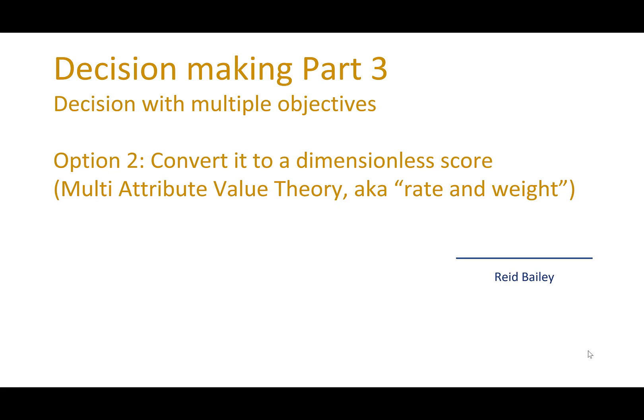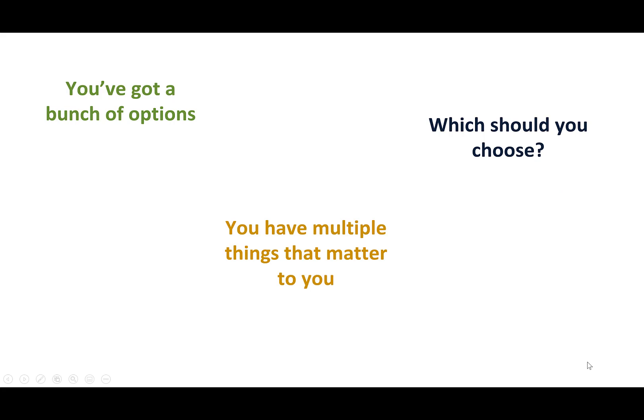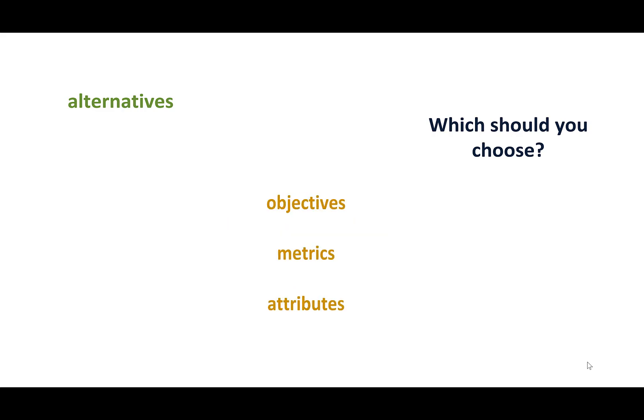Here we're looking at making decisions with multiple objectives, and we're going to explore an approach where you convert all those objectives to a dimensionless score. Colloquially sometimes called rate and weight, or more formally, multi-attribute value theory. Regardless of the name, it's a familiar situation — you've got a bunch of options, alternatives, and multiple things that matter to you, which go by many names: objectives, metrics, attributes. Which of these alternatives should you choose?